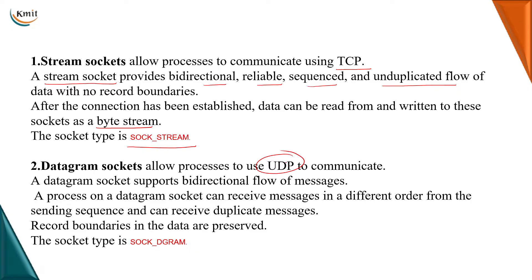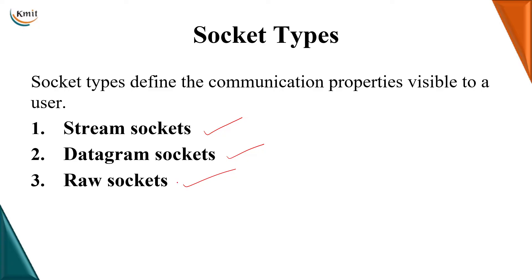Then we have datagram sockets, which allow processes to communicate using the UDP protocol, that is the User Datagram Protocol. The UDP protocol is connectionless and unreliable. Though we have a bi-directional flow of messages, we do not guarantee that the messages received will be in order, or we may receive duplicate messages. The record boundaries of data are preserved, and the socket type is referred to as SOCK_DGRAM. The third type is raw sockets, which have access to lower-layer protocols such as the IP protocols, and are basically used for troubleshooting and network diagnostic services.